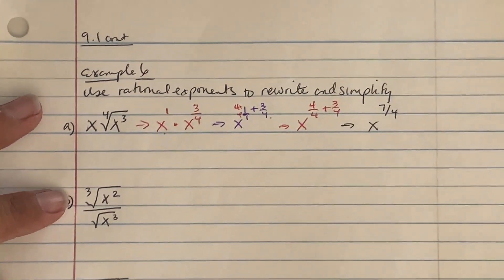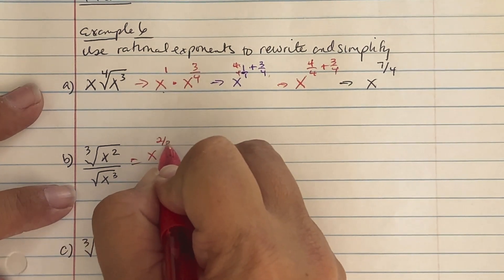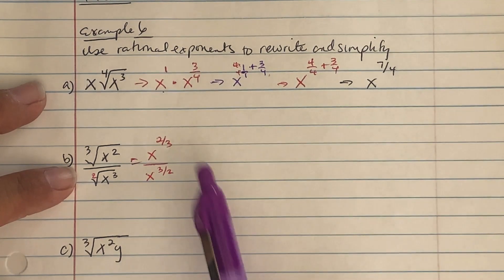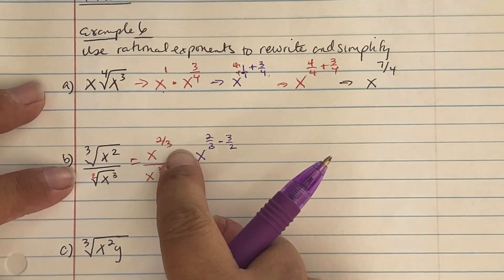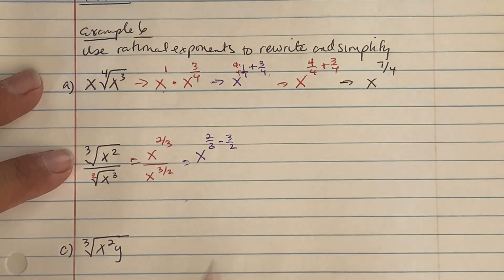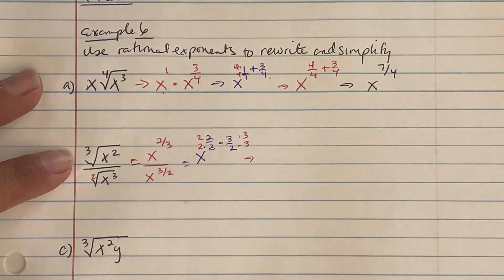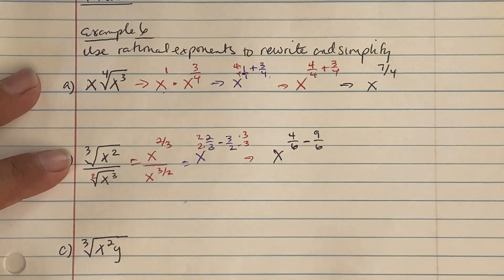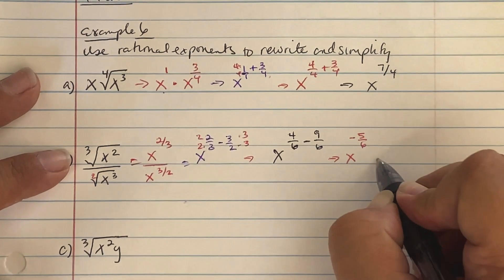On B: cube root of x squared over the square root of x cubed. Rewrite in rational form as x to the 2 thirds over x to the 3 halves. Since the bases are the same, subtract exponents: x to the 2 thirds minus 3 halves. Finding common denominators — 3 and 2 are factors of 6, so multiply to get x to the 4 over 6 minus 9 over 6, giving x to the negative 5 over 6. Negative exponents aren't allowed, so rewrite as 1 over x to the 5 sixths.